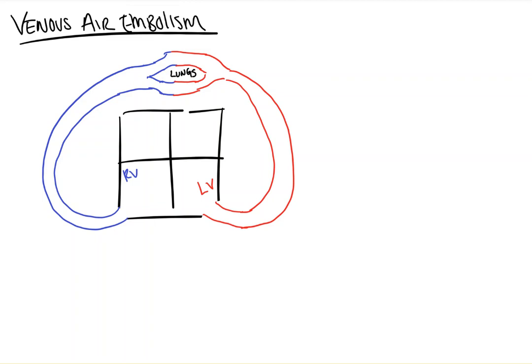The first thing to understand is that a venous air embolism is functionally the same as a pulmonary embolism, because that's what it is — but it's not made of a clot, it's just made of air. At the end of the day, it stuffs up something along the route from the right ventricle to the lungs, be it in the pulmonary artery or one of the two branches.